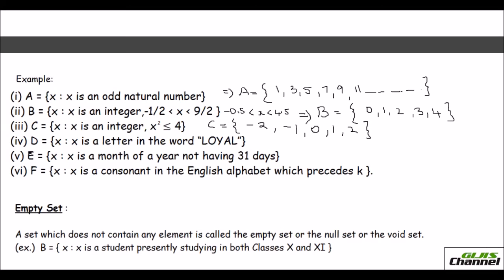Now the fourth question. D is a set which has the element X and X is the letter from the word loyal. When you write in the roster form you should not repeat anything again and again. No repetition is allowed. So here when you write set D it has all letters from loyal: L, O, Y, A, and don't write the L again because you have already written.